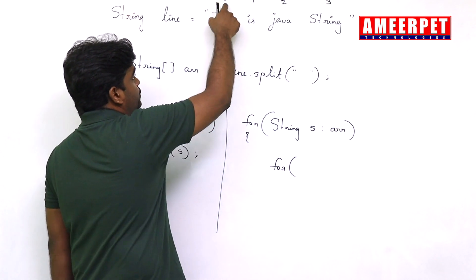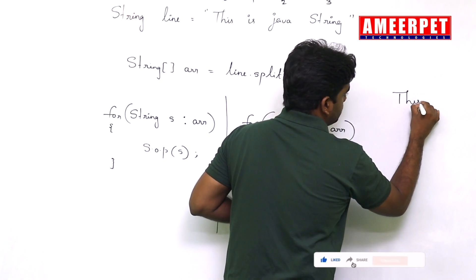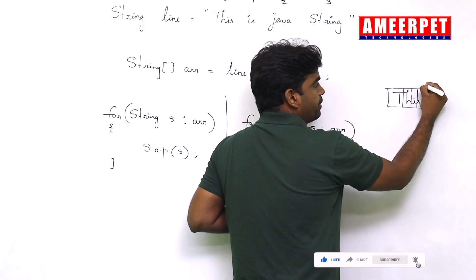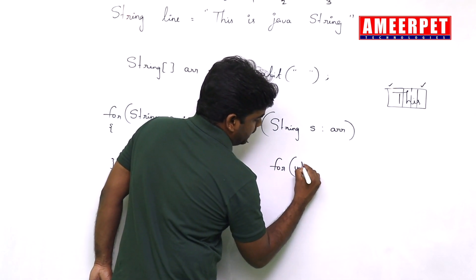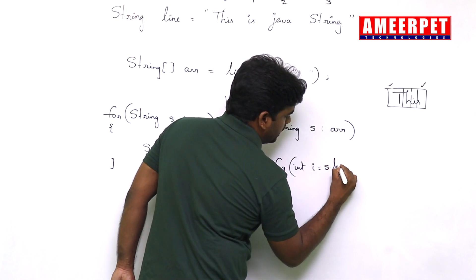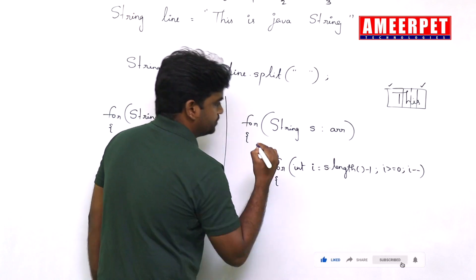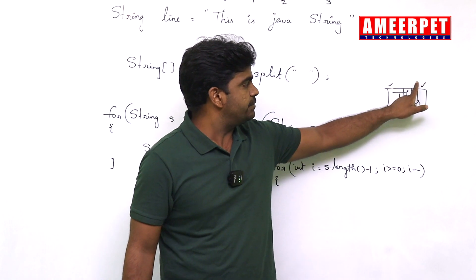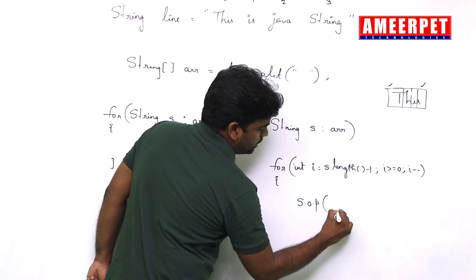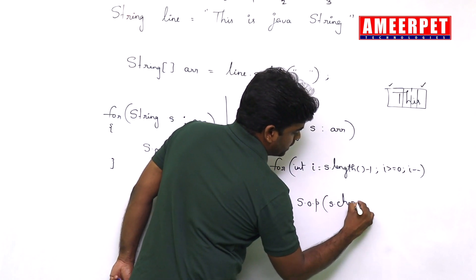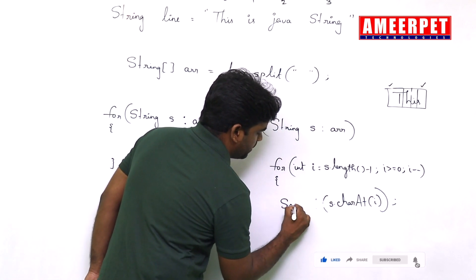For each string s collected from the array, we need to reverse it. We should know the length. From length minus 1 to 0 we have to repeat — we have already seen how to reverse a given string. For int i equals s.length() minus 1, i greater than or equal to 0, i minus minus — in reverse it will repeat the loop one by one until the 0th location. Then print System.out.print(s.charAt(i)) — write print, not println.